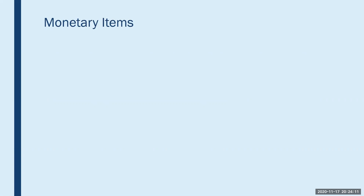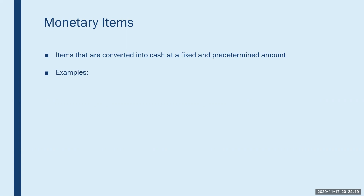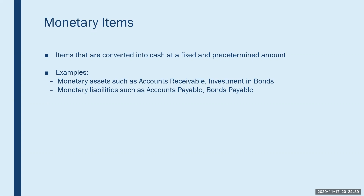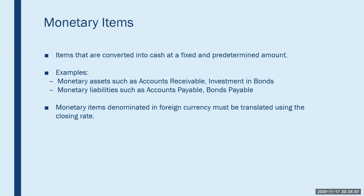Monetary items are items that are converted into cash at a fixed and predetermined amount. We can have monetary assets — including cash, accounts receivable, and investments in interest-bearing securities that do not fluctuate a whole lot in value. We can also have monetary liabilities; most liabilities are monetary liabilities, and anything with the suffix 'payable' attached to it is a monetary liability. When converting monetary items — which relate to the statement of financial position, the balance sheet — into equivalent Canadian dollars, these are to be translated using the closing rate at the end of the fiscal year.